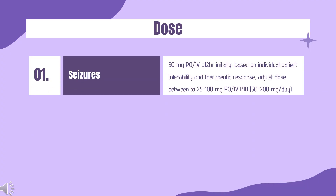Dose for partial-onset seizures: 50 mg orally every 12 hours initially. Based on individual patient tolerability and therapeutic response, adjust dose to between 25–100 mg orally twice daily, totaling 50–200 mg per day. Injection may be used for patients when oral administration is temporarily not feasible; clinical study experience with injection is limited to 4 consecutive days of treatment.